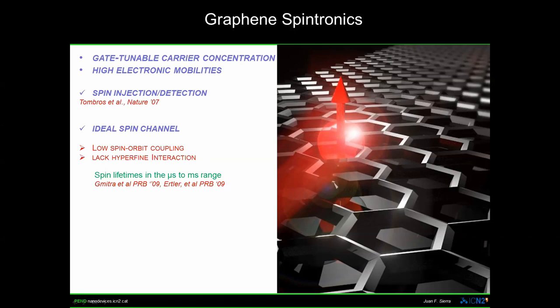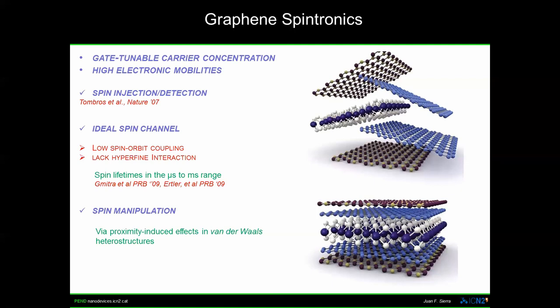This is due to the low spin-orbit coupling of graphene and also the lack of hyperfine interaction. This means that spins injected in graphene can propagate over very long distances. It was theoretically predicted that spins can propagate with spin lifetimes in the range of microseconds to milliseconds, which is extremely large compared to any other material. What is particularly relevant for graphene is that you can in principle manipulate the spins — something unique to this platform.